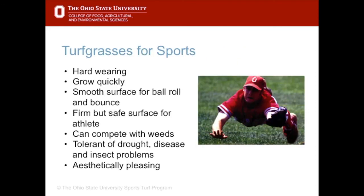In addition to a turf grass's adaptability to a region, when we are selecting turf grasses for use on sports fields there are very specific criteria that we need those turf grasses to meet. First of all, turf grasses used for sports must be hard wearing. They must be able to grow quickly from seed and grow quickly once they have been damaged. The turf grasses for sports must provide a smooth surface for ball roll and ball bounce, which is important for sports like field hockey, soccer, baseball, cricket, and tennis.